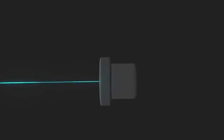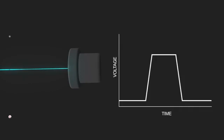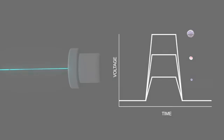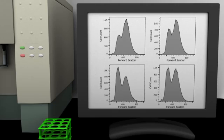The detector converts the scattered light into a voltage pulse, which is directly proportional to the amount of forward scattered light. The computer converts these data into a histogram plot with the amount of forward scattered light on the x-axis and the number of cells on the y-axis.